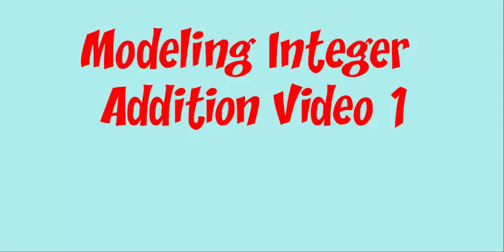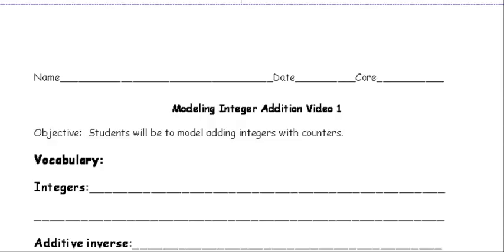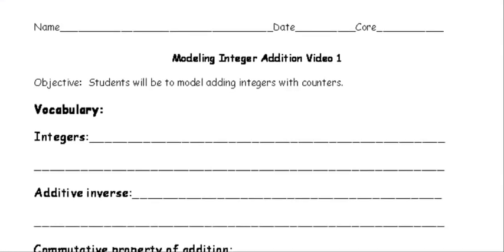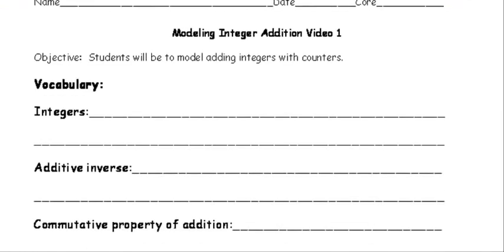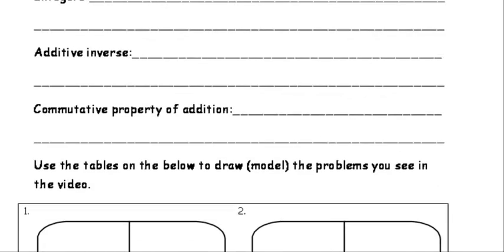In this first video, we're going to do Modeling Integer Addition. Please take out your handout homework assignment — it looks like what I have up here on the screen. It's just a Modeling Integer Addition Video 1. At the top of the sheet, you're going to go ahead and fill in the vocabulary. You can pause the video and rewind it as needed, so don't feel like you have to do it as the video goes along.